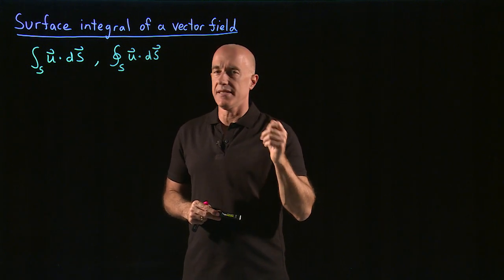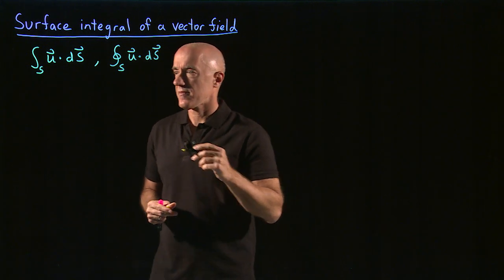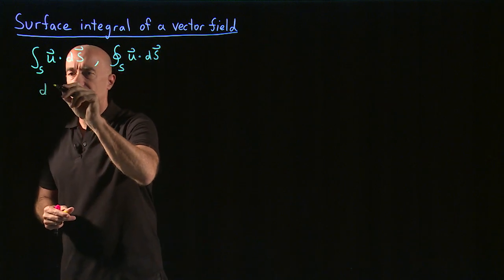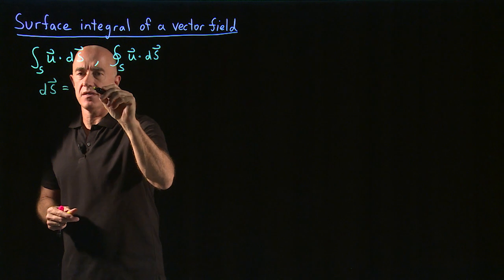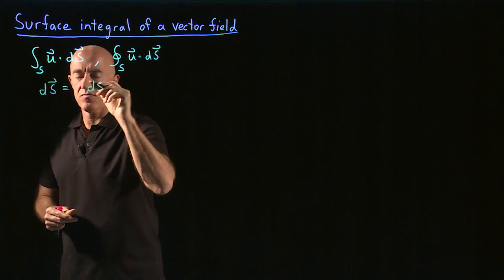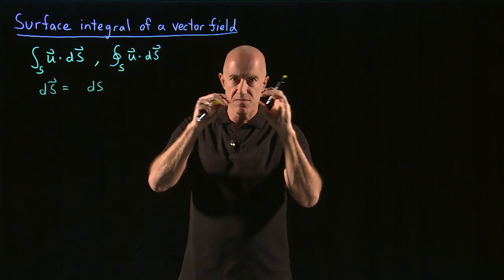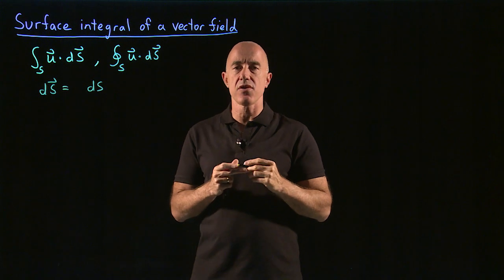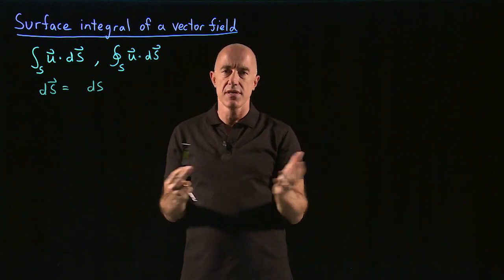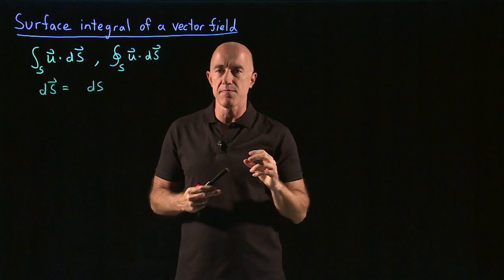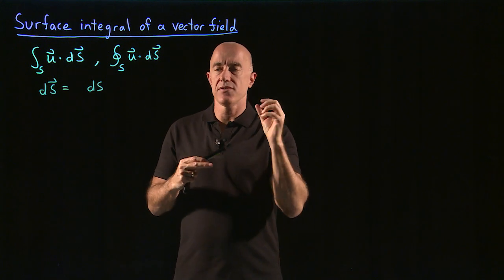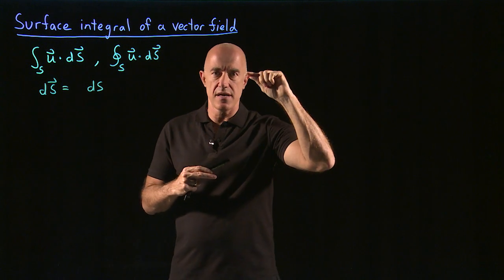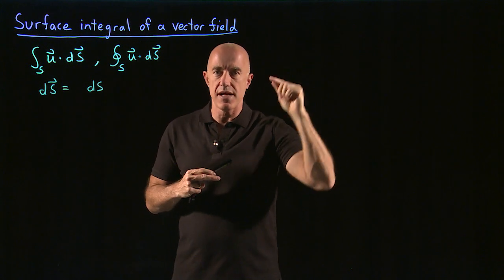What is this ds vector? This ds vector is a small amount of ds, which means that it's a small element of area. So you have a surface, and you can break the surface up into small elements of area. So ds is going to be an area of one of those small elements.